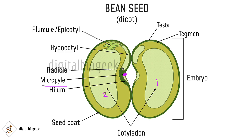In some plants like castor, double fertilization takes place — two male nuclei enter the ovule. One fuses with the egg to form the zygote, and the other fuses with the nuclei situated in the pole to form endosperm. Endosperm is a food-storing tissue. Seeds that have endosperm are called endospermic seeds, and those that do not — like pea and bean — are called non-endospermic seeds.